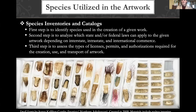The first step of navigating complicated treaties is to keep a very specific species inventory and catalog. Identify the species used in the creation of any given artwork and the locations where you harvested them. The second step is analyzing the state or federal laws that apply to that piece, including information on interstate, intrastate, and international commerce.